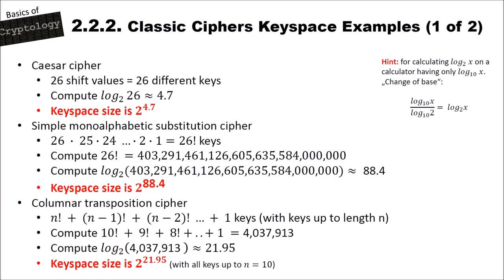Now let's look at classic cipher keyspace examples. The Caesar cipher has 26 different shift values, meaning 26 different cryptographic keys. To compute the keyspace size, we compute the logarithm base 2 of 26, which is about 4.7. So the keyspace size is 2 to the power of 4.7.